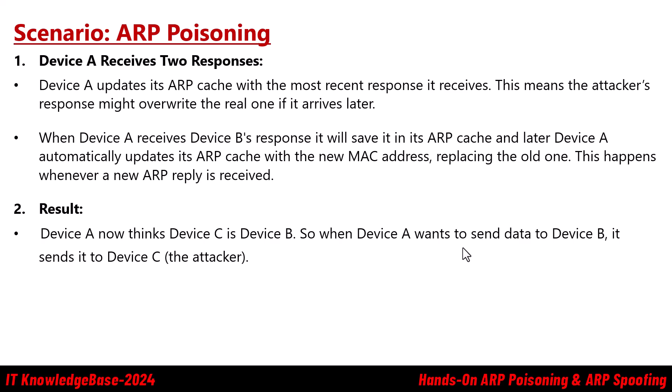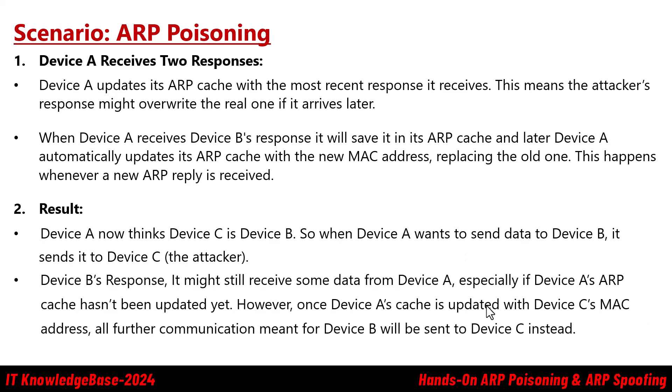So when Device A wants to send data to Device B, it sends it to Device C — the attacker. Device B might still receive some data initially if Device A's ARP cache hasn't been updated yet. However, once Device A's cache is updated with Device C's MAC address, all further communication meant for Device B will be sent to Device C instead. That's why attackers continuously send fake ARP replies to ensure their MAC address stays in Device A's ARP cache, keeping the attack active.